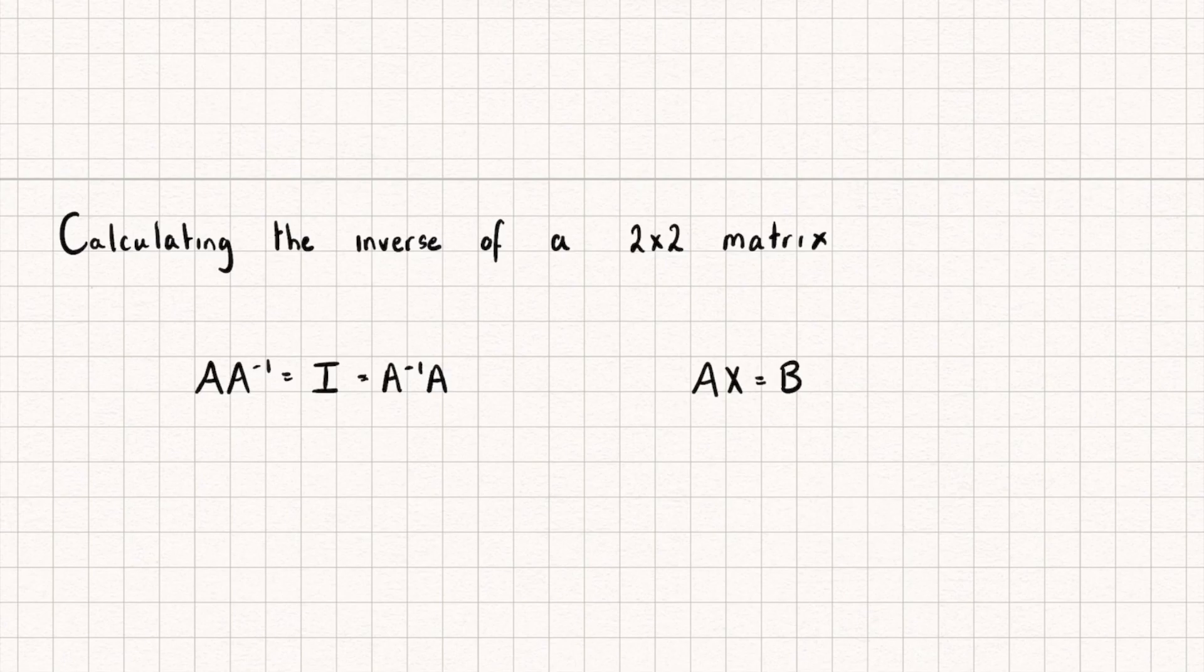Well, we can't just divide both sides by A like we would with a normal equation, because we can't divide with matrices. So what we're going to do is pre-multiply both sides of this equation by the inverse of A. So, I get A inverse AX is equal to A inverse B.